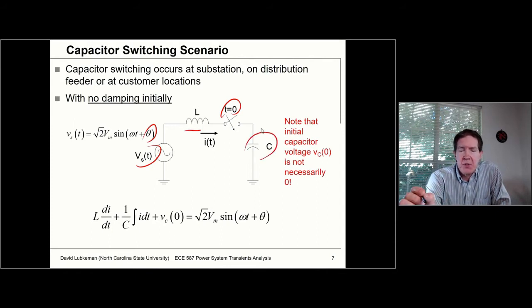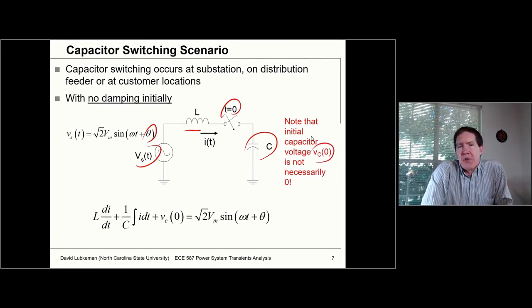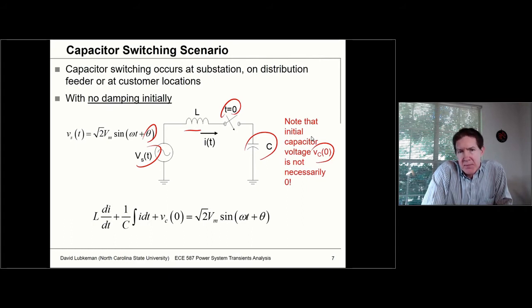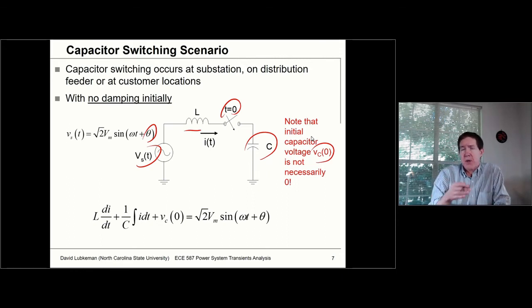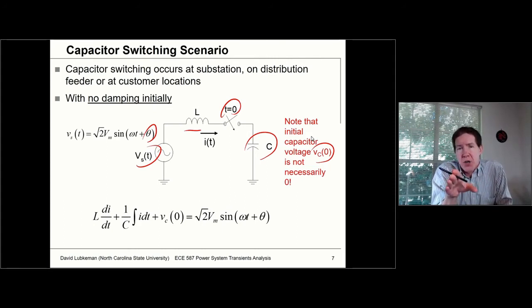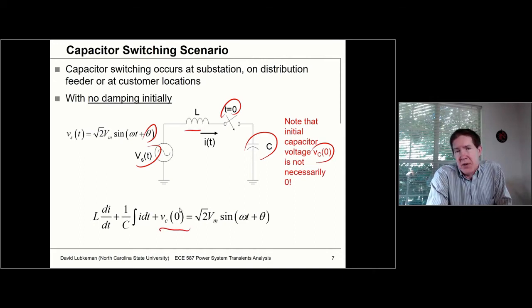We also have a capacitor being switched into the circuit. Note this capacitor doesn't have to have zero voltage across it. At some point in time that capacitor was switched off, and when you switch off a capacitor, there's typically going to be some trapped charge on it — it switches off at a zero crossing, so we have some voltage across the capacitor. In the time from when it switches off to when it gets switched back on, it could still have some initial voltage. We have to model the fact that there's going to be some initial voltage value — it doesn't have to be zero.